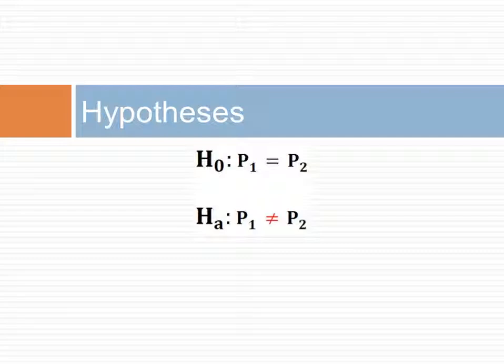Next, we state the hypothesis. The null hypothesis is that there are no differences in the rates, or said another way, that the two rates are the same. The alternative hypothesis is that there is a difference. Notice that these hypotheses require a two-sided test.